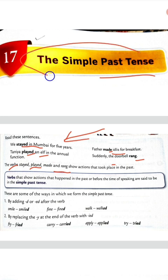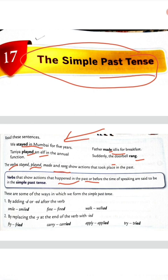So we need to know what is simple past tense. Simple past tense क्या होते हैं? Let's read the definition. Verbs that show actions that happen in the past or before the time of speaking are said to be in the simple past tense. तो जो verbs past में हुए हों, मतलब जो भी कोई काम past में हुआ हो, या तो हमारे बोलने से पहले हुआ हो, वो हमारा simple past tense कहलाता है।